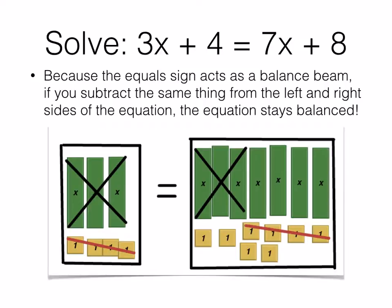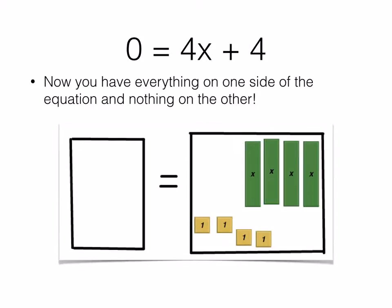So if we subtract 3 x-bars from the left, we have to do the same thing to the right. We can subtract 4 of the positive 1's from the left and 4 of the positive 1's from the right. And that will leave us with nothing on the left-hand side, so 0 equals 4x plus 4 is another way to represent the equation we were given.